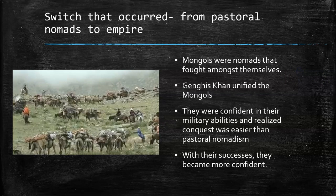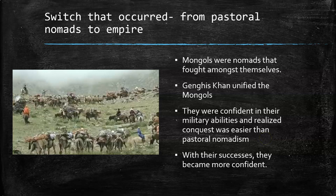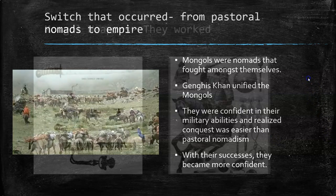This is a pronounced switch from what the Mongols started off as, which were pastoral nomads. Pastoral nomadism is an effective but hard way to live — you're subject to the weather, following animals from place to place, setting up shop temporarily. They switched from this pastoral life into a military force that was unstoppable. It was Genghis Khan who unified them and made them realize it's easier to conquer than to be pastoral nomads, and they were good at it. With their success, they got more and more confident, which caused that huge spread.